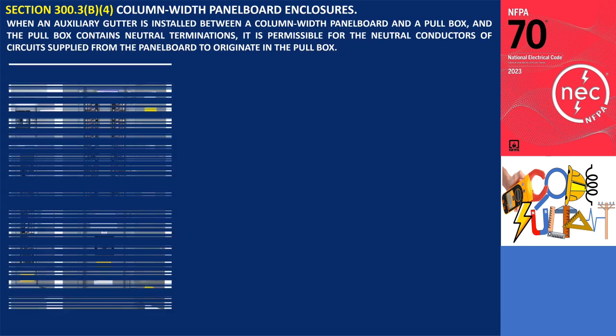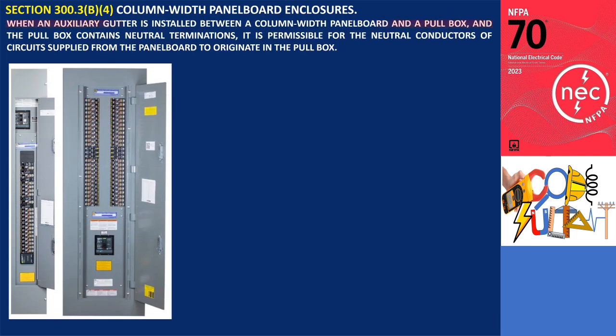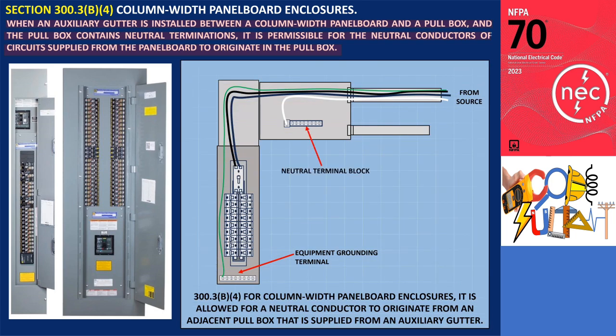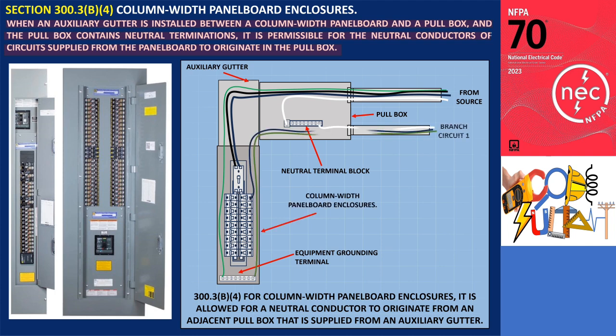Section 300.3b.4 permits the limited use of a pullbox equipped with a terminal block for the connection of the system neutral, as the point of origin for branch circuit neutral conductors. A properly sized neutral is run to the pullbox, which is connected by an auxiliary gutter to a column-width panel board. From the panel board, the individual branch circuit neutrals may be run from the pullbox and need not go back to the panel board where the hot conductors originate. This saves space within the panel board but is only permitted for column-width panel boards connected by an auxiliary gutter to a pullbox that is manufacturer equipped with a neutral terminal block.